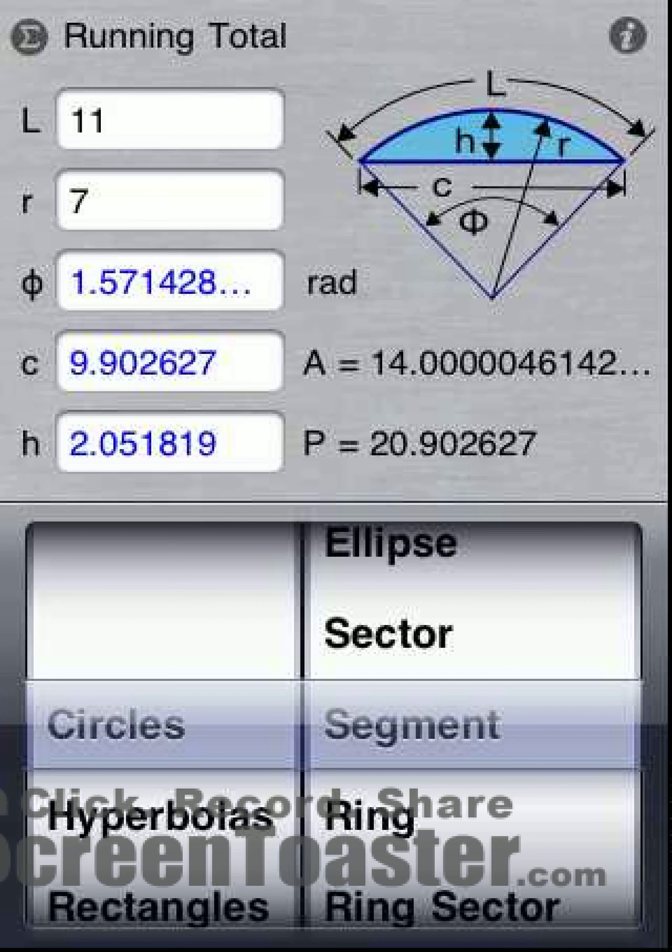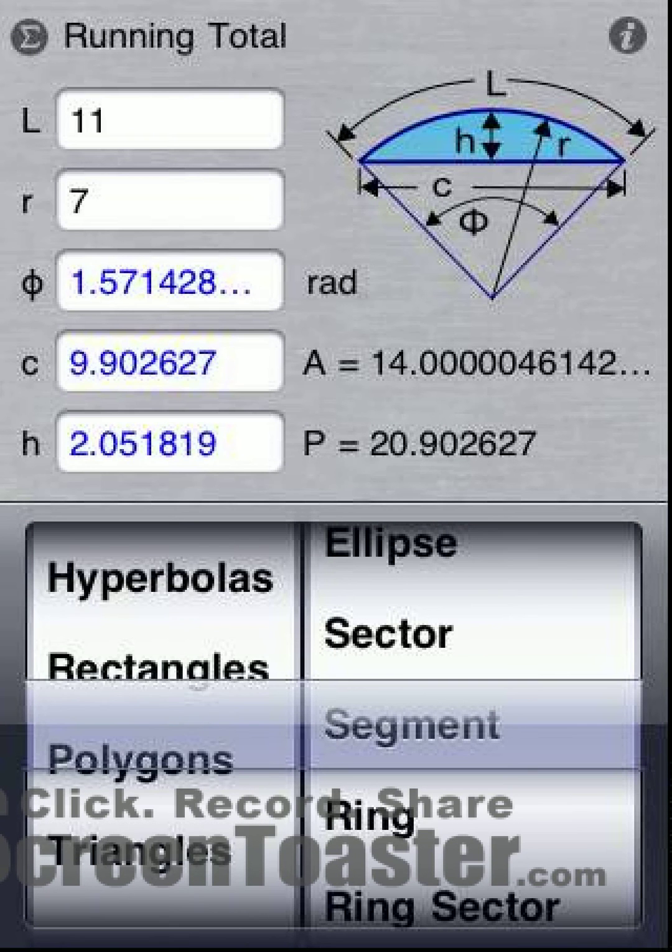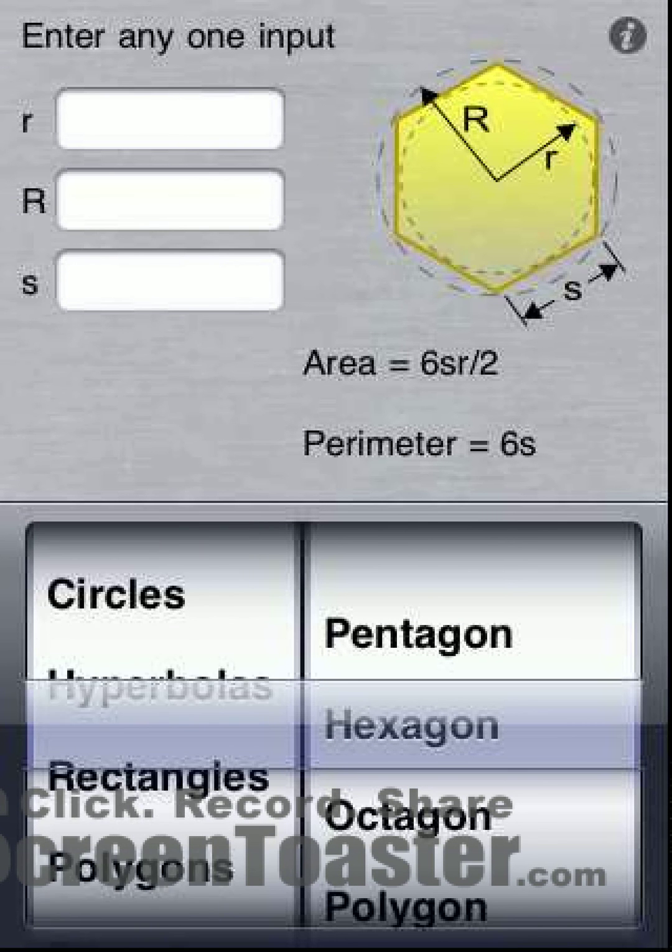One more time saving feature. When we change categories, the area calculator remembers the last shape used in each category.